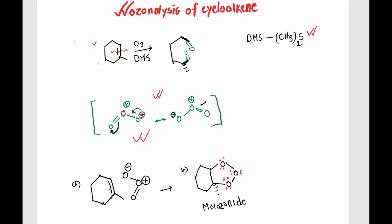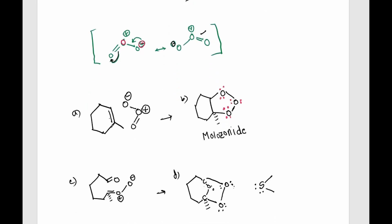Now let's talk about the mechanism. First of all, our alkene and our ozone molecule come closer together, where the negatively charged oxygen atom will attack our carbon atom here. That will push the pi electrons towards this carbon, adding the oxygen atom here, and the electrons of the double bond will move onto this oxygen atom. This forms a compound named molozonide, where this carbon atom is bonded with this oxygen atom, and this carbon is bonded with this oxygen atom, and these oxygen atoms are already bonded to each other.